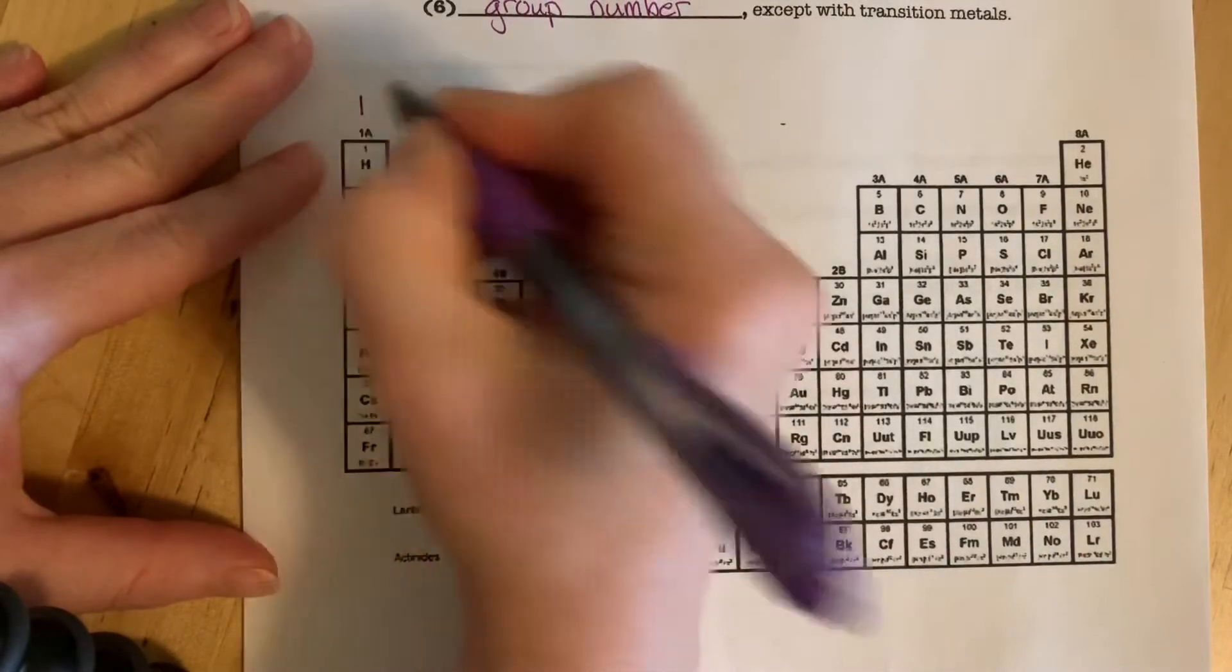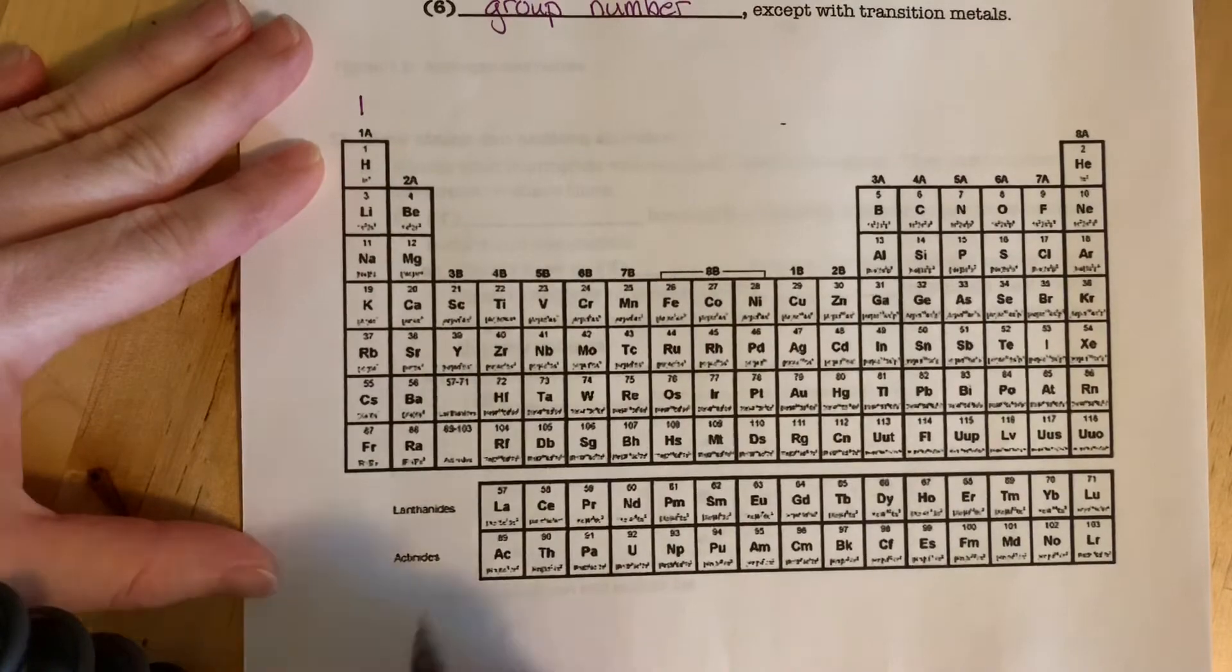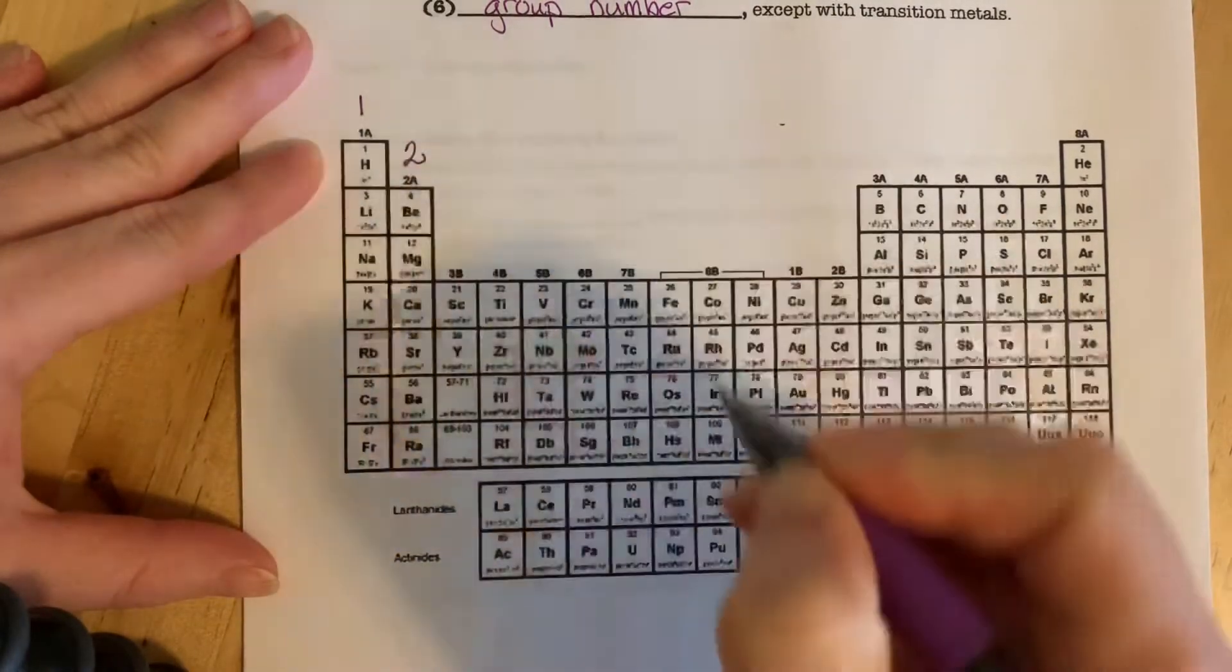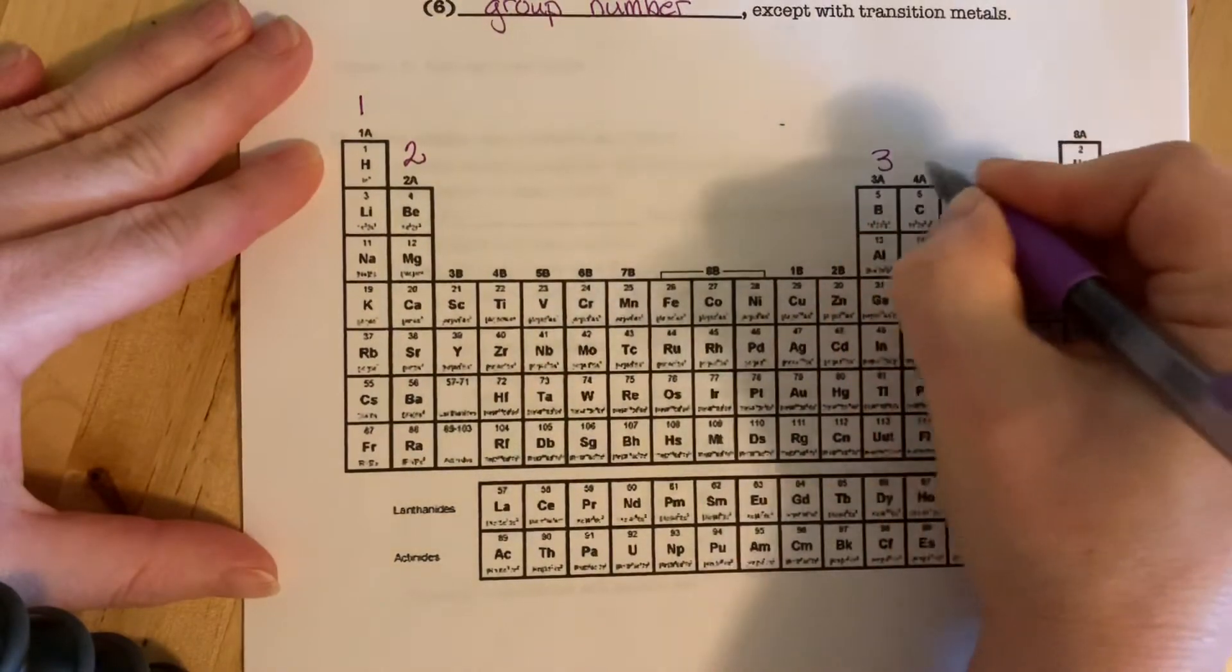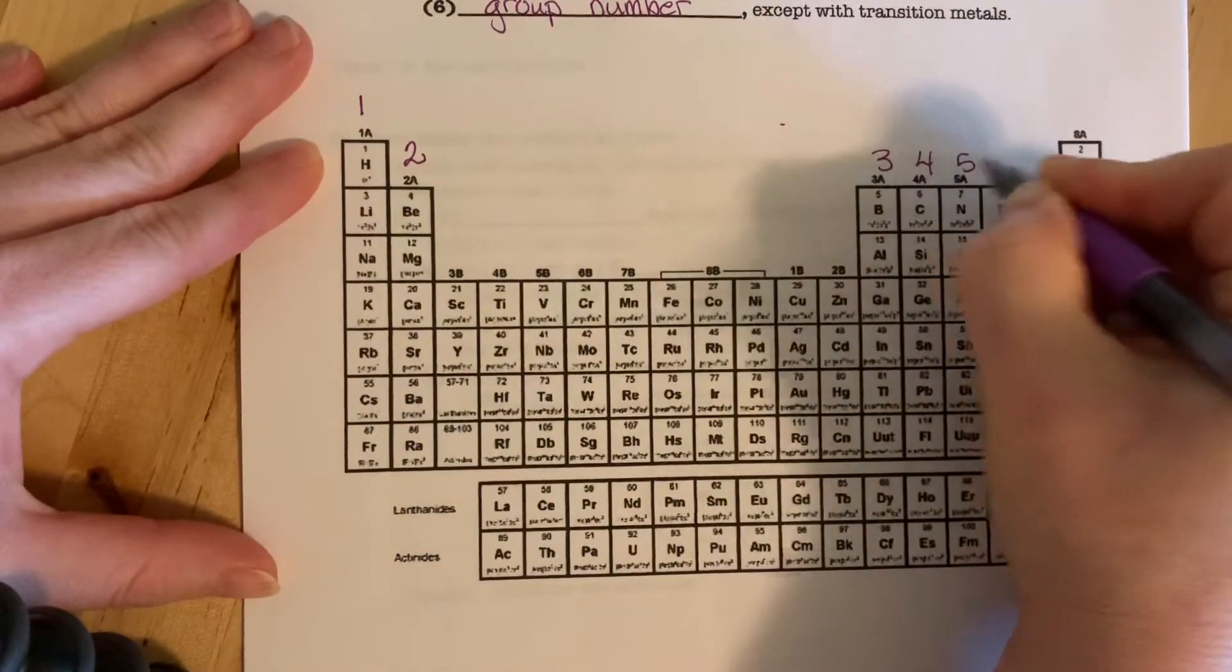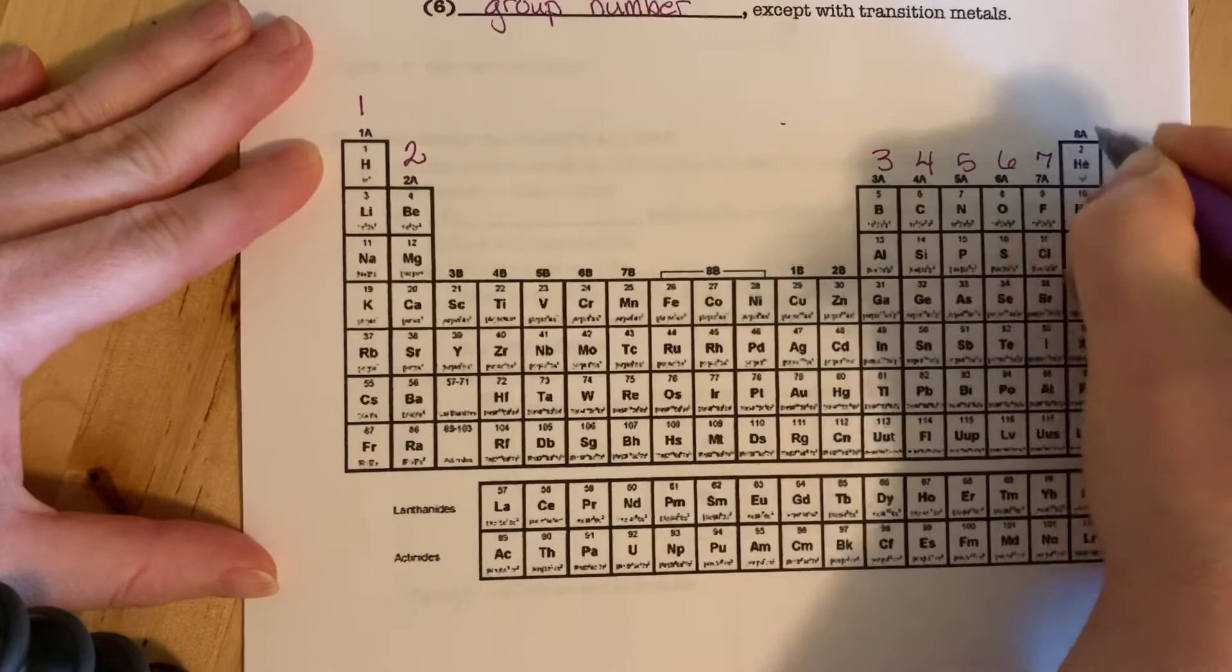So just starting here, those give one electron. Those have two. We'll skip over the transition metals. Three, four, five, six, seven, eight.